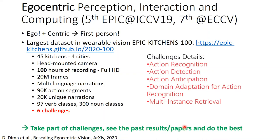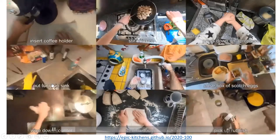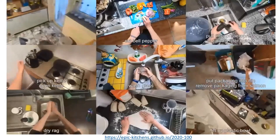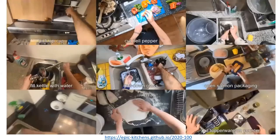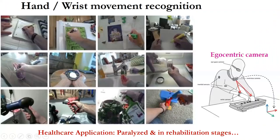Looking at past results and papers from previous challenges helps you learn and do your best. The egocentric camera means the camera is overhead on my head, chin, or neck — so whatever I'm doing gets recorded. It's not another camera; from my own body I can check my hand or other things. This kind of egocentric camera can determine hand or wrist movement, with huge applications especially for paralyzed cases, rehabilitation stages, or elderly people's support.